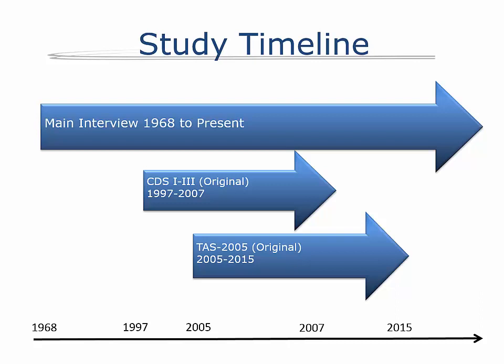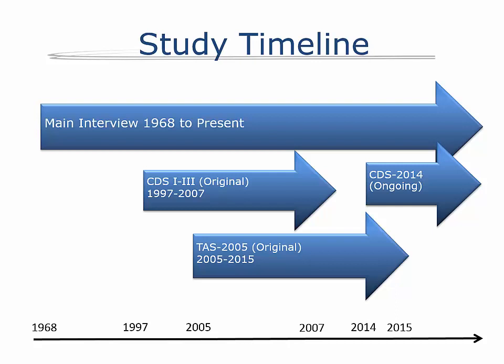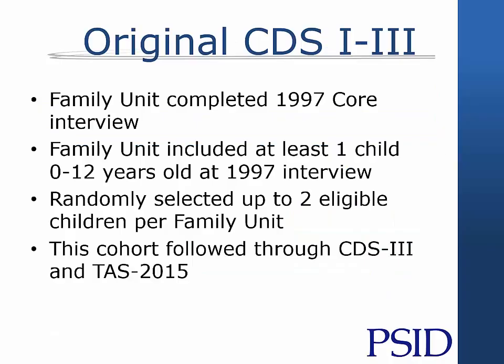TAS fills the gap between information collected in the CDS and information on adulthood collected from panel members who enter the main PSID study once they have assumed economic independence as heads and spouses or partners. By 2014, all eligible children in the original CDS study were adults. Beginning in 2014, the new ongoing CDS includes all eligible children in PSID households born since the original CDS study began in 1997. And beginning in 2017, all young adults age 18 to 28 will be eligible for the ongoing TAS, regardless of their participation in either the original or ongoing CDS studies.